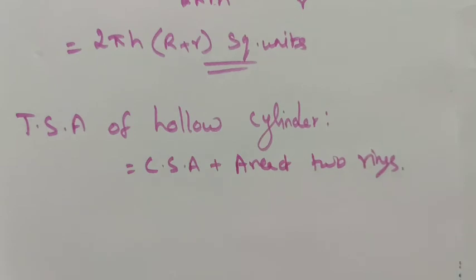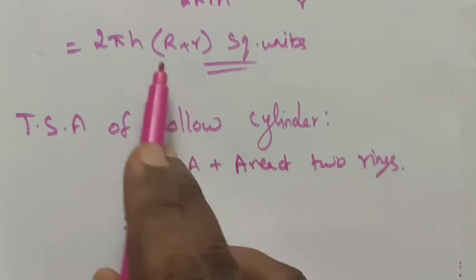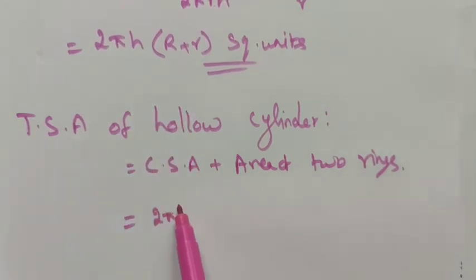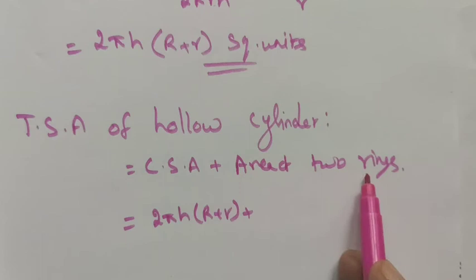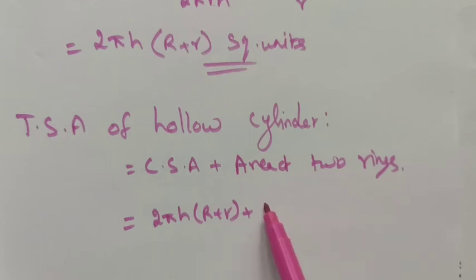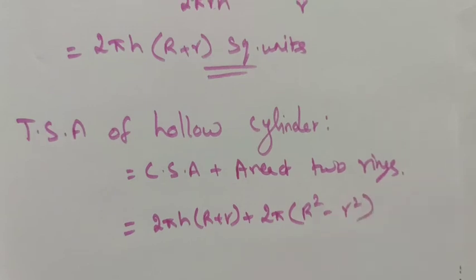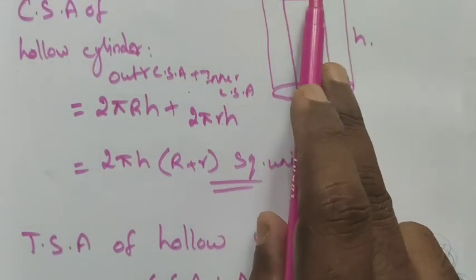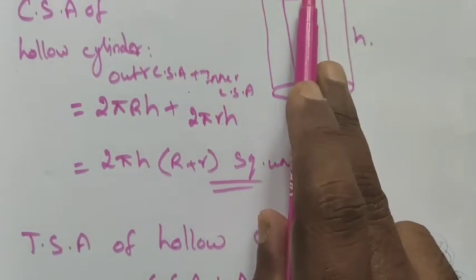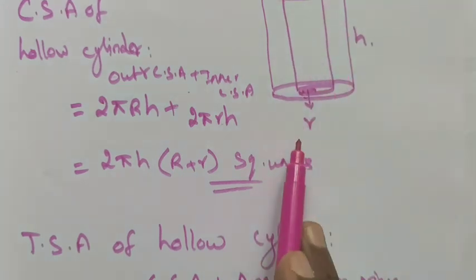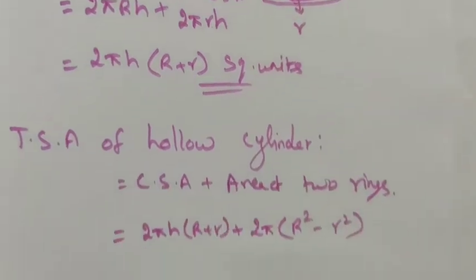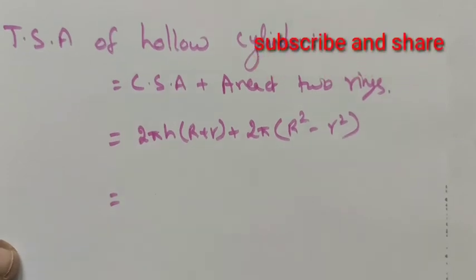The area of the two rings — top and bottom. The curved surface area formula is 2πh(R + r). Now we add the area of the outer and inner rings: 2π(R² - r²). Here we want to find the area of the ring, which is the difference between the outer radius area and the inner radius area.